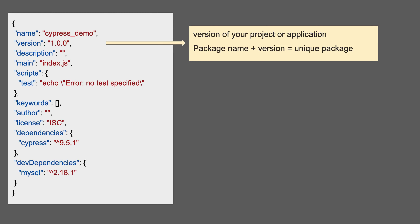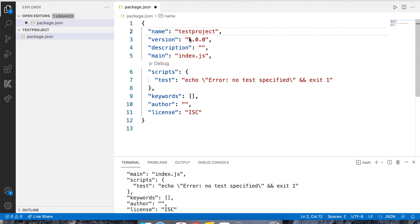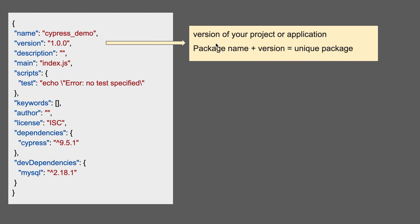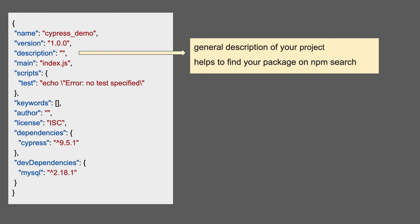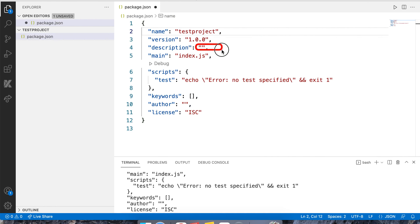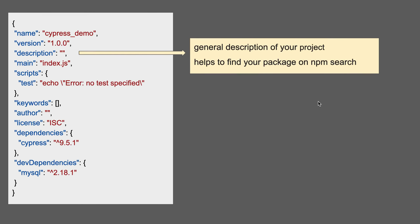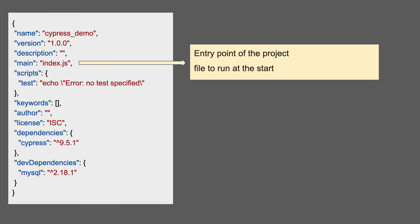Coming to version — this is the version of your project. When you start, it will always show version 1.0.0, but you can change it. The package name along with the version gives a unique name to your package. Then, description is the general description of your project — it will help find your package in npm search, and you can give any description here.